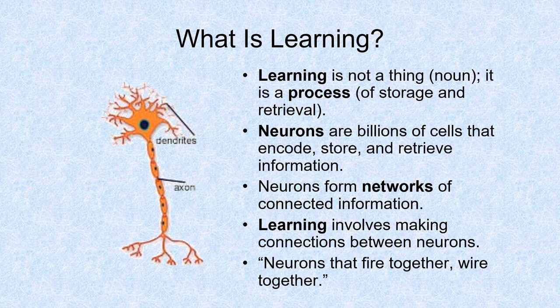The retrieval and storage takes place electrically in neurons, as pictured here. Neurons are billions of cells that encode, store, and retrieve information, and they connect together to form networks. That's how our memories are stored. If you have a stronger neural network — because electricity is passing from one neuron to another — they form a strong connection, making for more easily retrievable memories. So learning ultimately involves making connections between neurons. Neurons that electrically fire together end up wiring together.